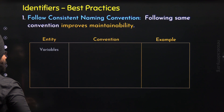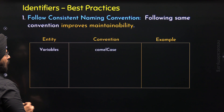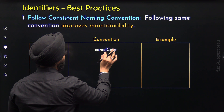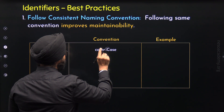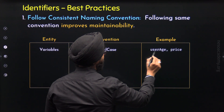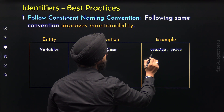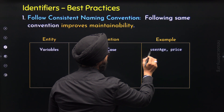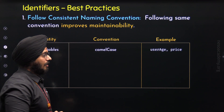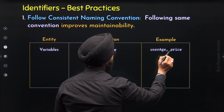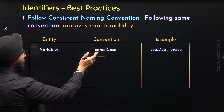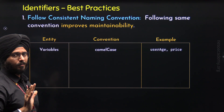Let's start with the first entity: variables. For variables, we can follow the camel case convention. By camel case, I mean the letters of the first word are all lowercase, but the first letter of the second word must be capitalized. For example, here we have the name userAge, which is formed from two words, User and Age. User is all lowercase, but the first letter of Age is capitalized. If we have a single word variable name, then all letters of that word must be lowercase.